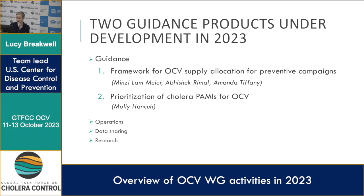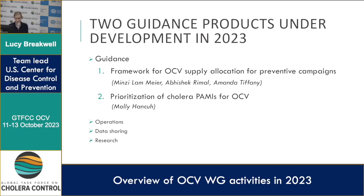Under guidance, we have two pieces that have been under development this year. First is the framework for OCB supply allocation for preventive campaigns — Minzy has been supporting this, and the work has been chaired by Abhishek from CSP and Amanda from CDC, with many of you contributing within a sub-team. Second is the prioritization of cholera palmies for OCB, which was started the year before and has been iteratively improved as we've been piloting the tool in different countries.